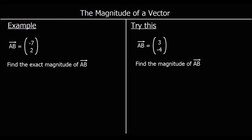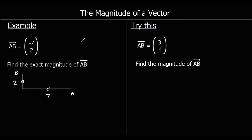The magnitude of a vector is the length of a direct route between two points. Here we've got A to B as negative 7, 2 — the top number is a change in the x direction and the bottom number is a change in the y direction. So from A to B we go negative 7, that's 7 to the left, and then 2 up. The magnitude of A to B is the length of the line directly between A and B.